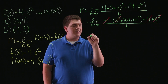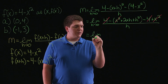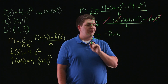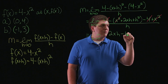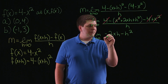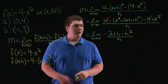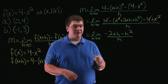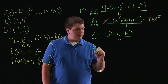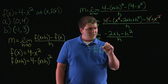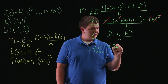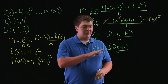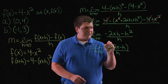What we're left with is the limit as h approaches 0 of negative 2xh — being careful to distribute this negative sign — minus h squared, all divided by h. There's a factor of h in each of the terms in the numerator, so let's factor those out. We're left with the limit as h approaches 0 of h times negative 2x minus h, all divided by h. There's a factor of h in the numerator and denominator, and these cancel.